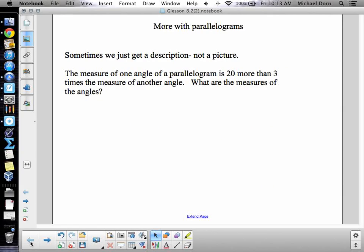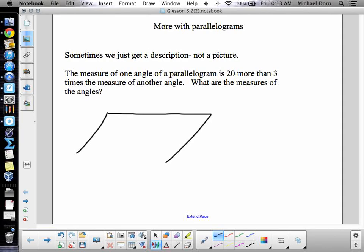Sometimes with some of the problems we're going to see today, we get just a description, not a picture. So we have to draw our own picture. The measure of one angle of a parallelogram is 20 more than three times the measure of another angle. What are the measures of the angles? So when we get just a verbal description, we're going to have to draw ourselves our own little picture. Okay. The measure of one angle is 20 more than three times the measure of another. So this one down here, which is the bigger one, has to be 20 more than three times the measure of the other angle. We have to make up our little algebra expression, too, don't we?